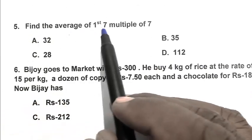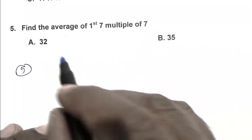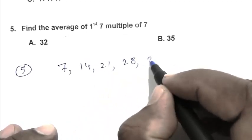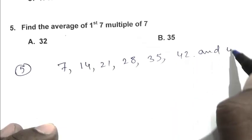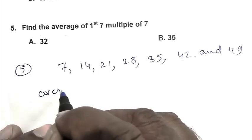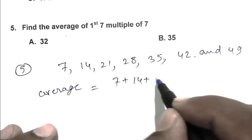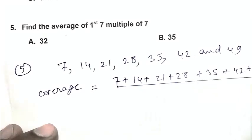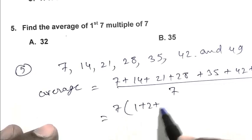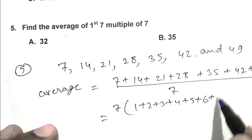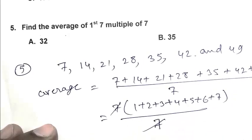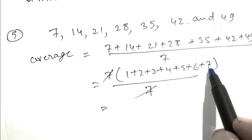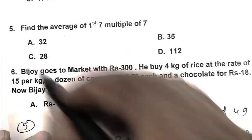Question number 5. Find the average of first 7 multiple of 7. So first 7 multiple of 7. After that 14, 21, 28, 35, 42 and 49. So average of 7 plus 14 plus 21 plus 28 plus 35 plus 42 plus 49 upon 7. So friend, 7 that is 1 plus 2 plus 3 plus 4 plus 5 plus 6 plus 7. So average of 7. Adding this 3, 6, 10, 15, 21 plus 7, 28. So friend, C is the right answer.